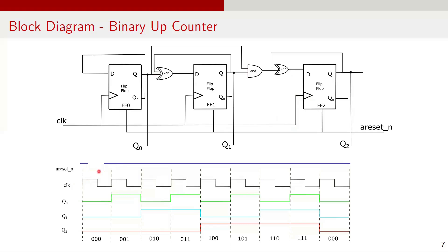At the initial state, when the active-low asynchronous reset is low, all flip-flops reset to 0 and the output is 000. At the first clock pulse, FF0 toggles from 0 to 1; FF1 and FF2 remain unchanged and the output is 001. At the second clock pulse, FF0 toggles from 1 to 0; FF1 toggles because the XOR of FF0 Q and FF1 Q is 1 at the rising edge of the clock; FF2 remains unchanged and the output is 010. At the third clock pulse, FF0 toggles again from 0 to 1; FF1 remains the same and the output is 011.